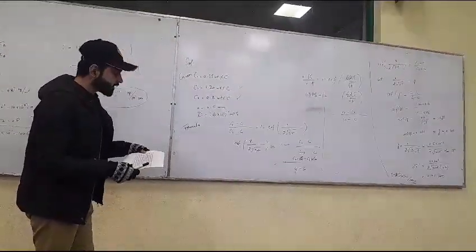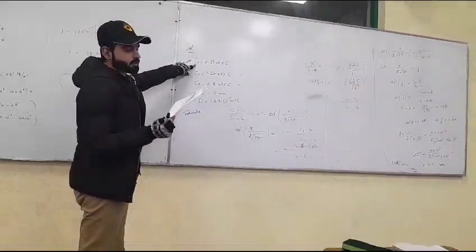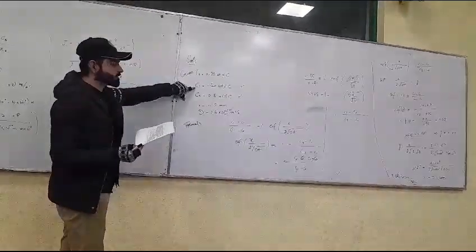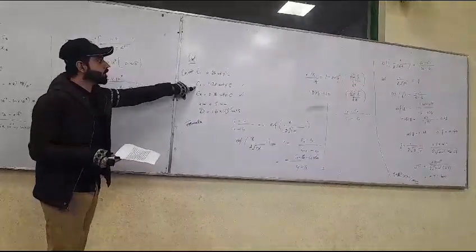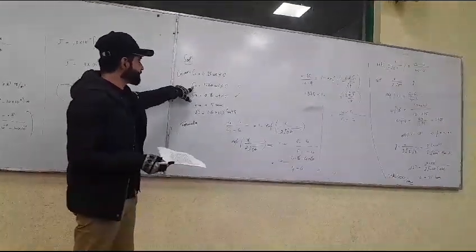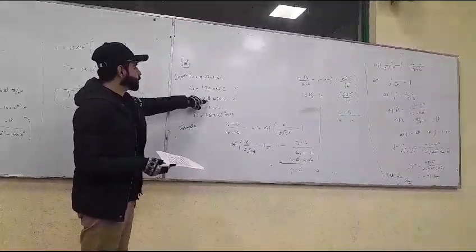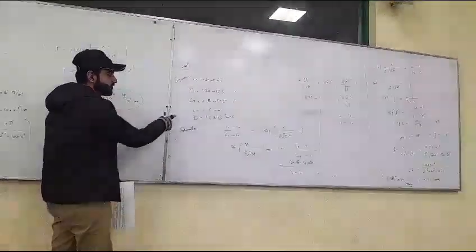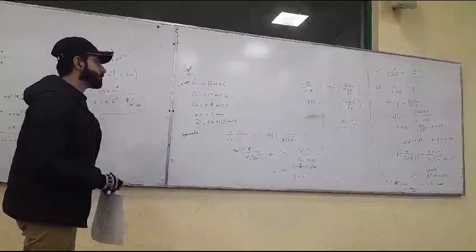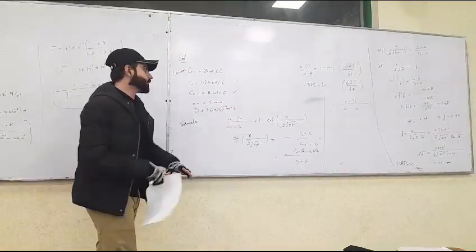The given values are: concentration at depth (initial) C₀ = 0.25 wt%, concentration at surface Cs = 1.20 wt%, and concentration at point x is 0.80 wt%. The depth x = 0.5 mm = 0.5 × 10⁻³ m, and the diffusion coefficient D = 1.6 × 10⁻¹¹ m²/s.